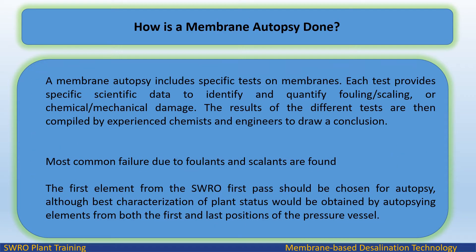Identifying the problem at an early stage can help save huge costs before excessive damage renders membranes useless. A membrane autopsy includes specific tests that provide scientific data to identify and quantify fouling/scaling or chemical/mechanical damage. Results are compiled by experienced chemists and engineers to draw conclusions. The first element from the SWRO first pass should be chosen for autopsy, although best characterization would be obtained by autopsying elements from both the first and last positions of the pressure vessel.